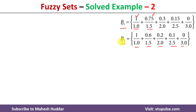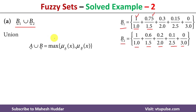First, we will start with the union of two fuzzy sets, denoted by B1 union B2. The union between two fuzzy sets is always calculated using this formula: if A and B are the two fuzzy sets, the union is always equal to the maximum of the degree of membership of an element x in fuzzy set A, and the degree of membership of element x in fuzzy set B. So we take the maximum degree of membership for each element.